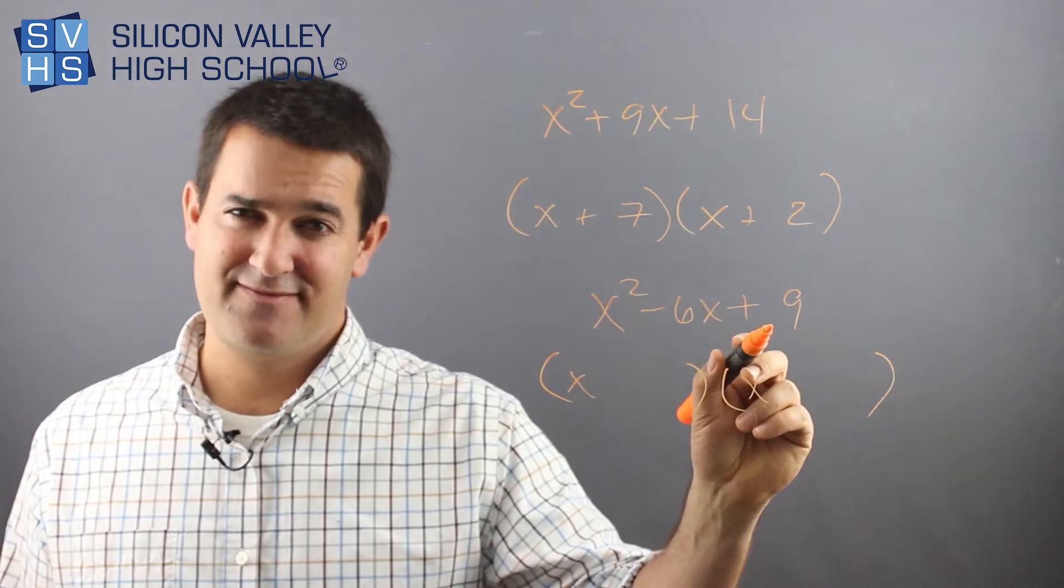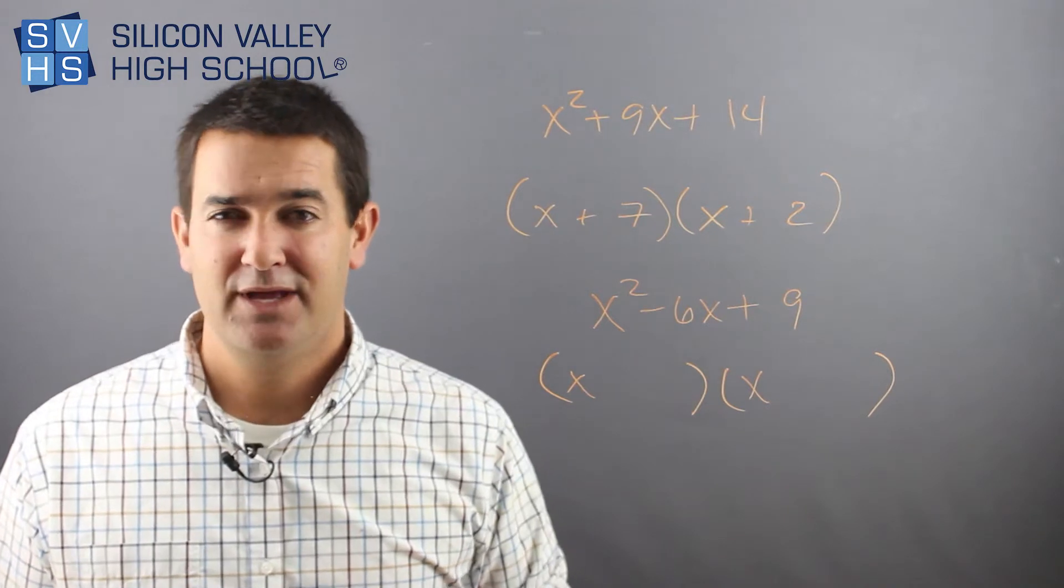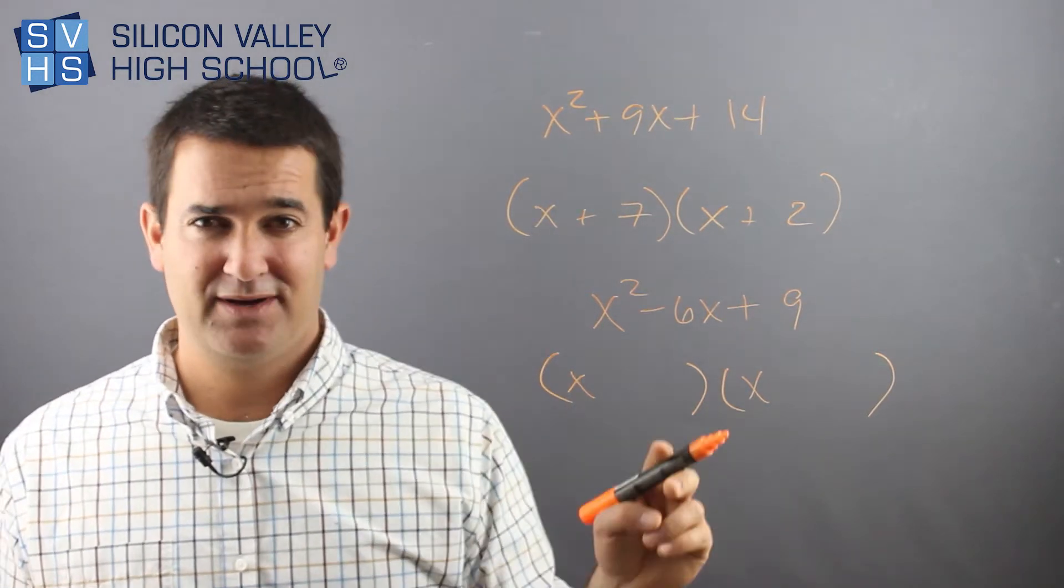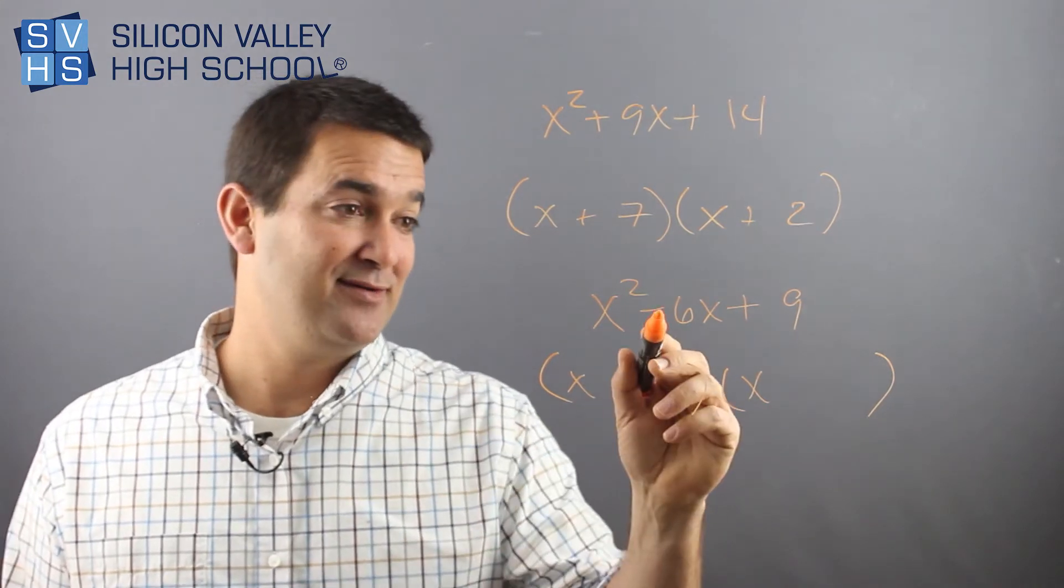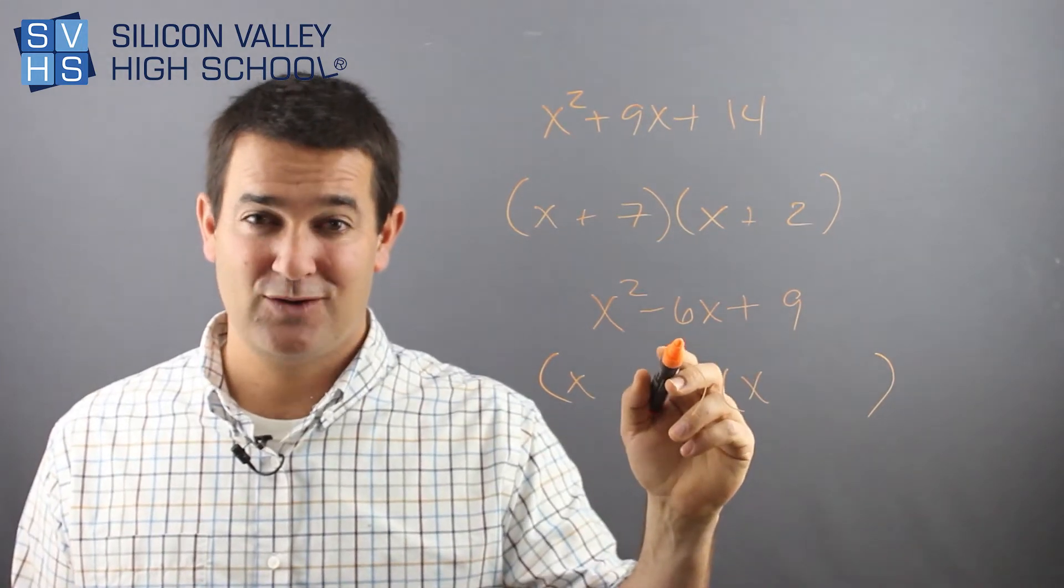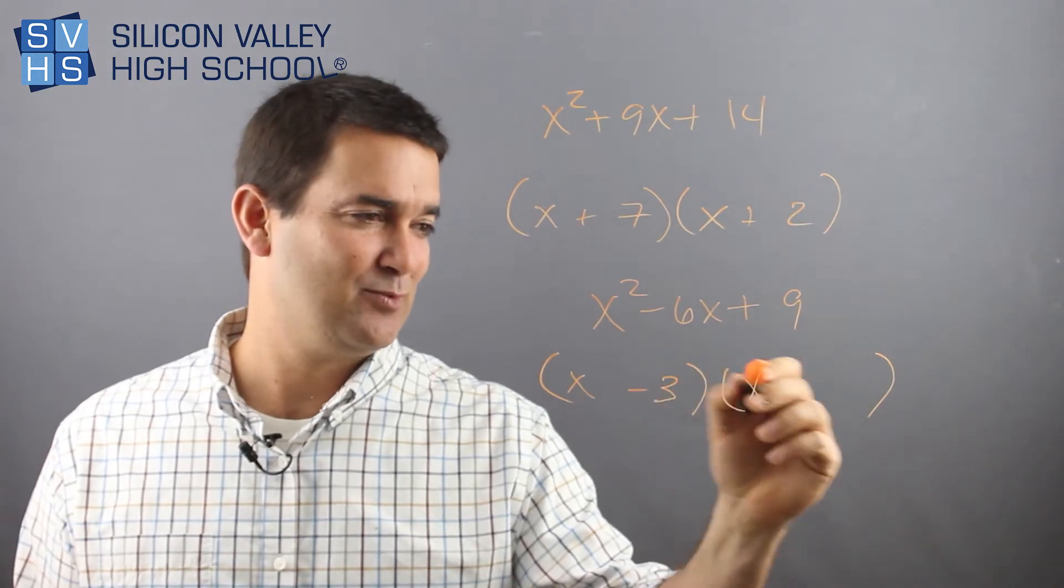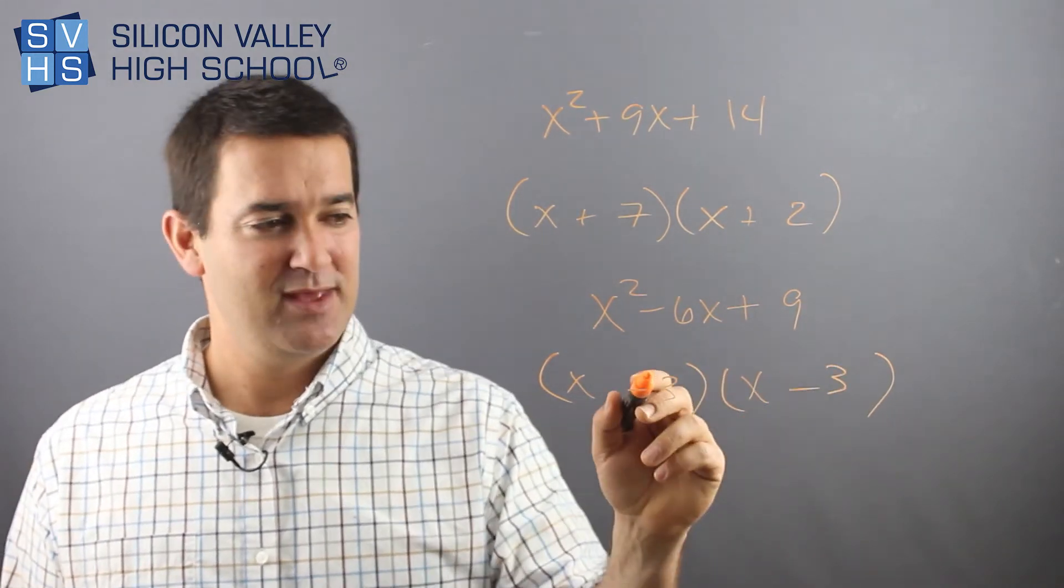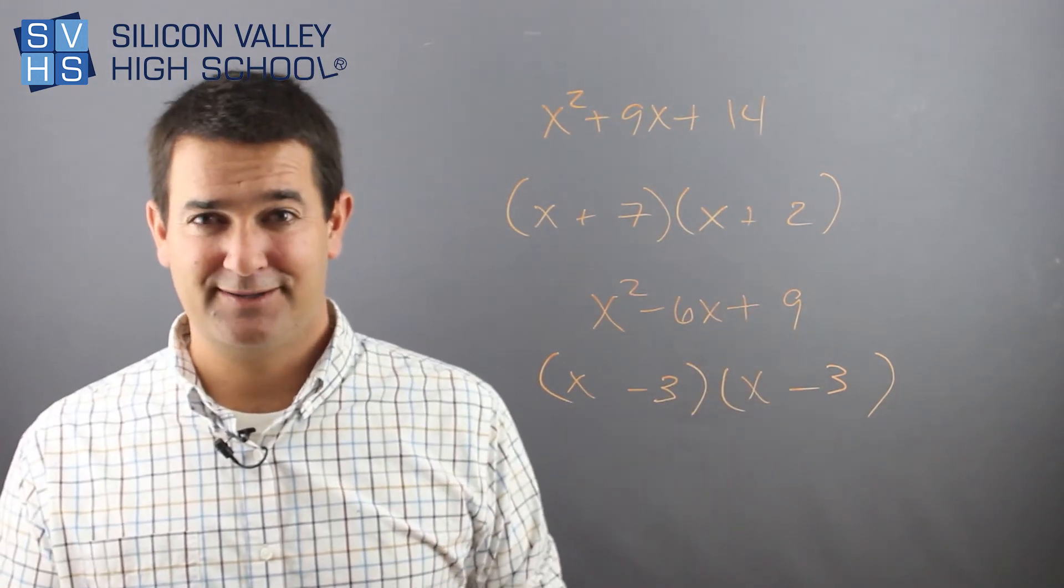It multiplies to be a positive 9, but it adds to be a negative. How is that even possible? Two positives multiply to be a positive, but two positives do not add to be a negative. Oh, what about two negatives? That's going to work. They multiply to be a positive and they add to be negative. So in this case, -3 and -3. Him times him is positive 9. Him plus him is -6. It's a miracle.